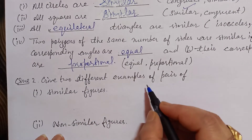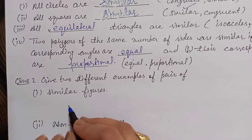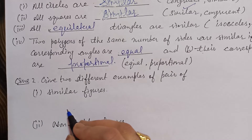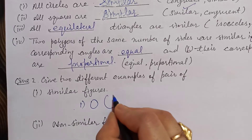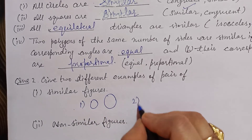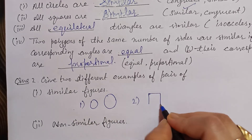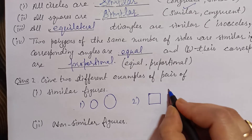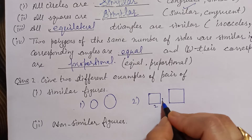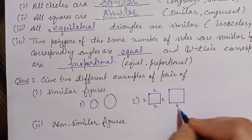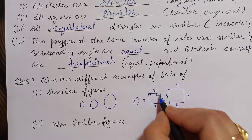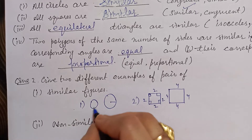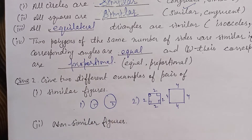Question 2: give two different examples of pairs of similar figures. First example: a small circle with radius 1 cm and a big circle — that is, two circles. Second example: a small square and a bigger square.